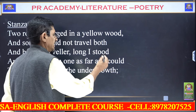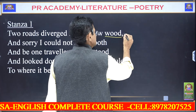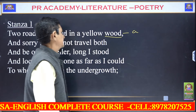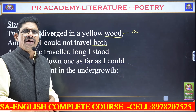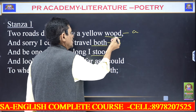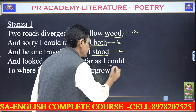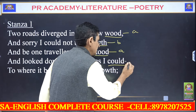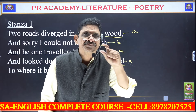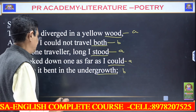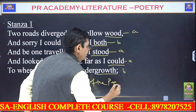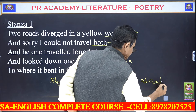Two roads diverged in a yellow wood. The word 'wood' is a monosyllabic masculine rhyming word, labeled A. 'Stood,' 'would,' and 'could' also rhyme with 'wood' — all labeled A. The B rhyme falls on different words. So the rhyme scheme of the poem is ABAAB.